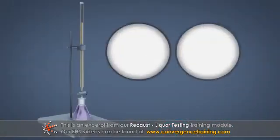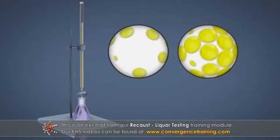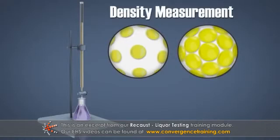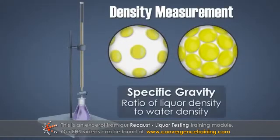Another test that is conducted is the density measurement of the liquors. This is sometimes reported as specific gravity, the ratio of liquor density to water density.